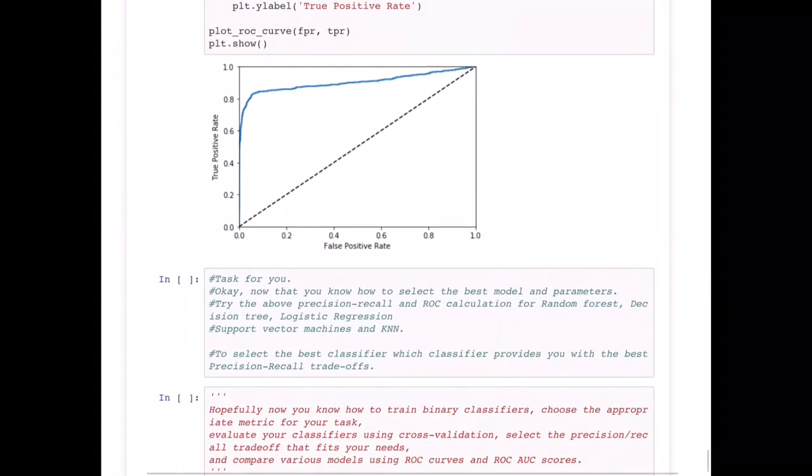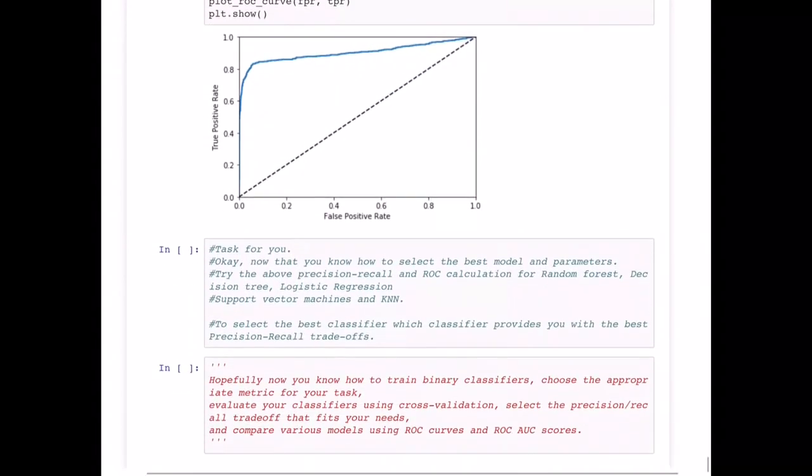Now that you know how to select the best model and the parameters, why don't you try to calculate the different precision and recall and the ROC curve for the different classifiers that we have already created - for the Random Forest, the Decision Tree, Logistic Regression, SVM, and the KNNs - and select the best classifier which provides you with the best PR curve.